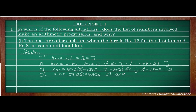In alternate method, T4 = T3 + D = 31 + 8 = 39. Clearly, each term is increasing by 8 — the constant common difference. 15, 15+8=23, 23+8=31, 31+8=39. Since the common difference is the same, this sequence is in AP.